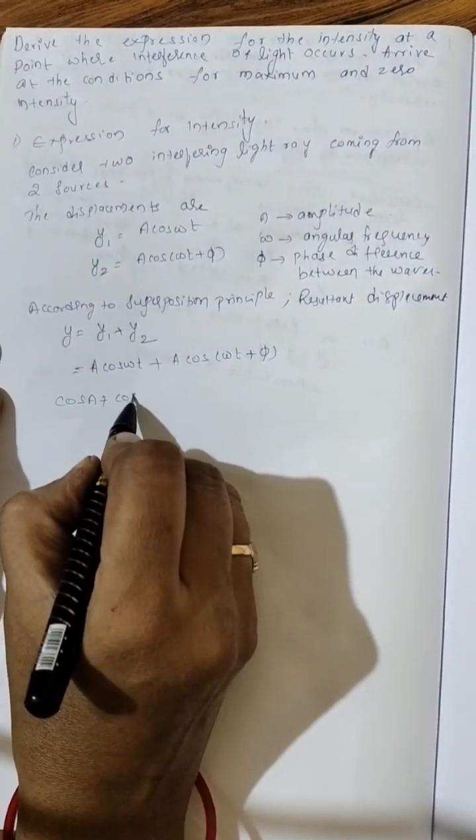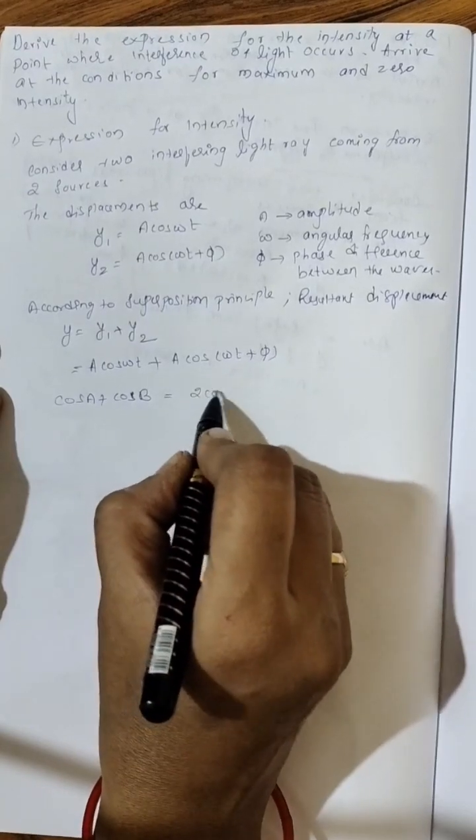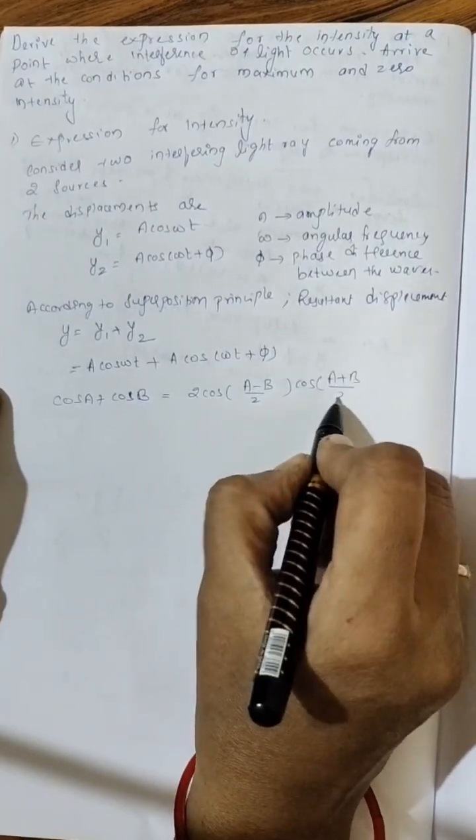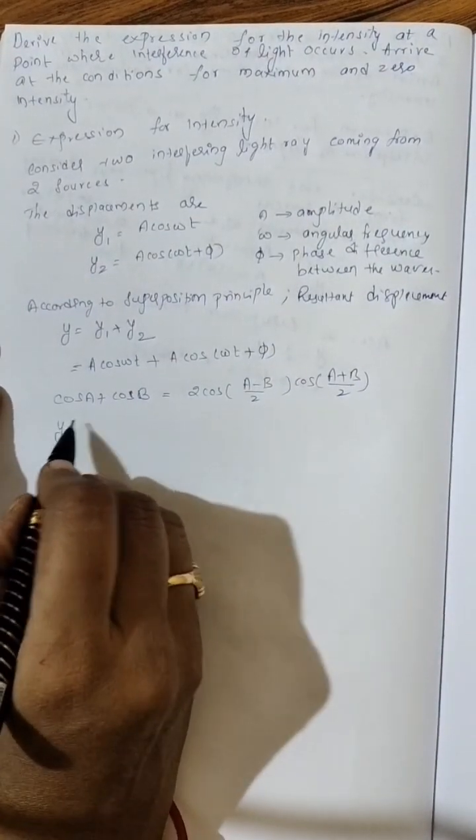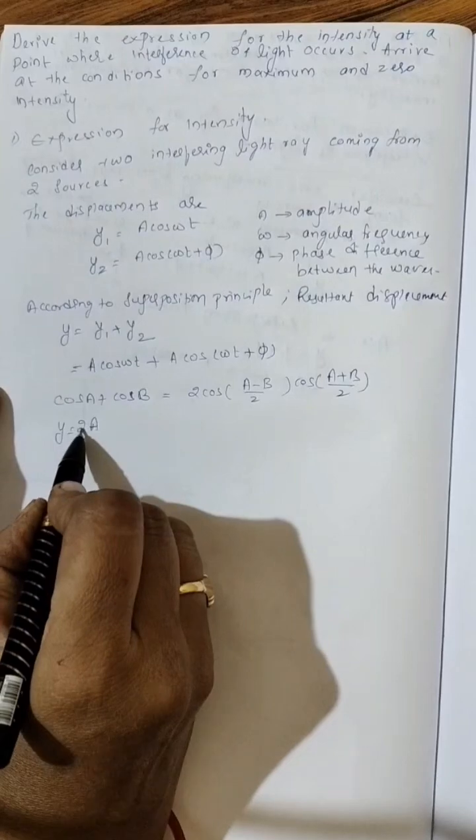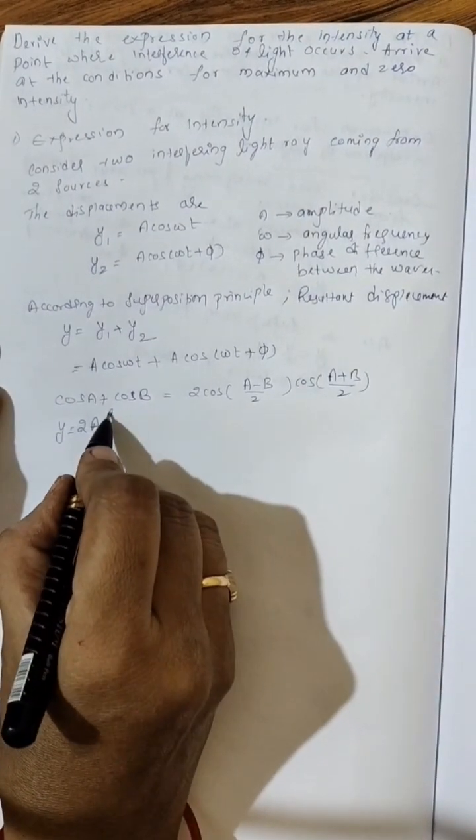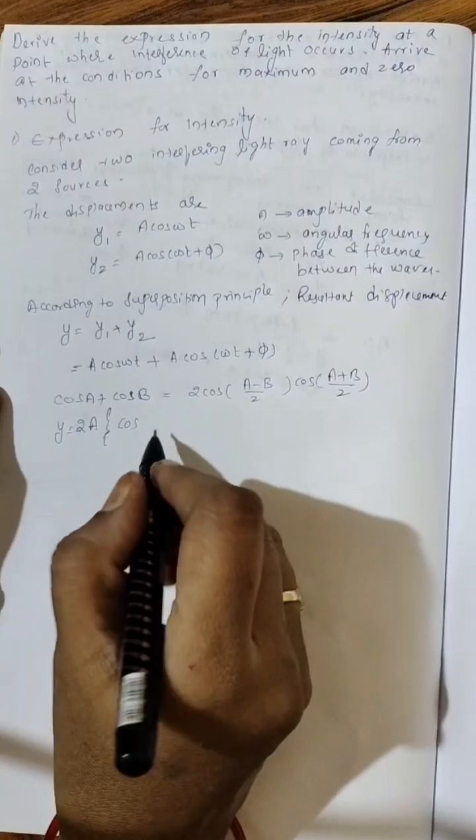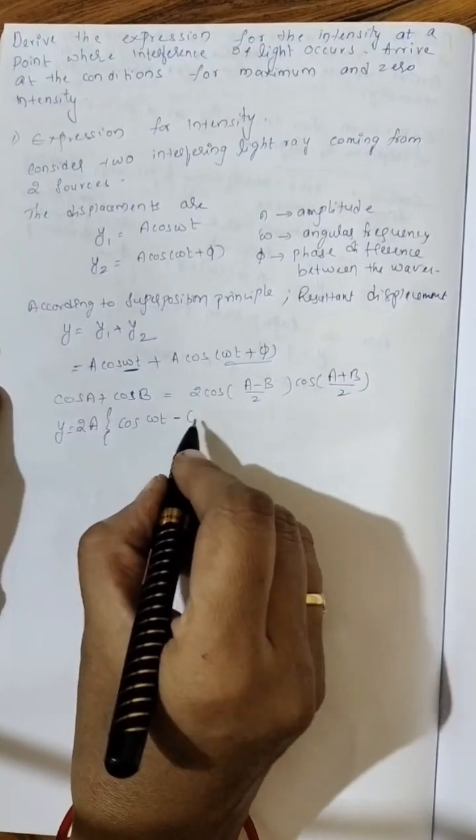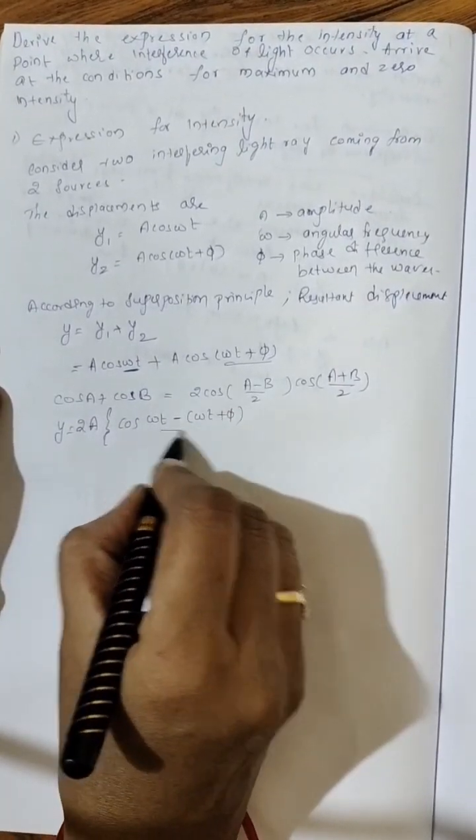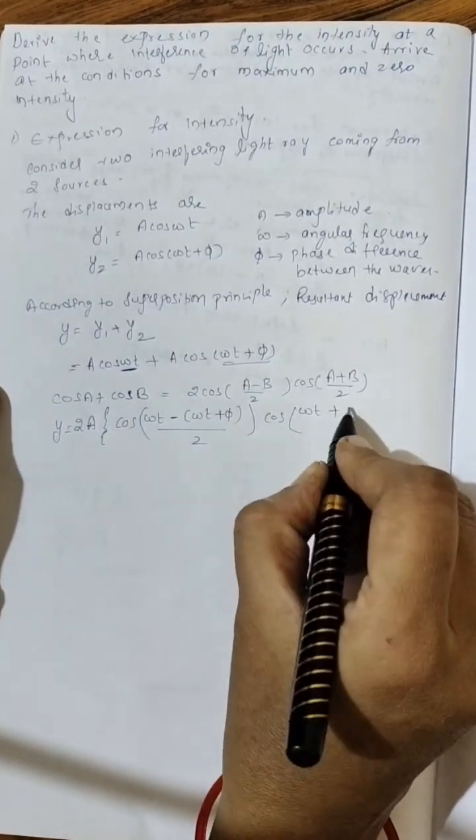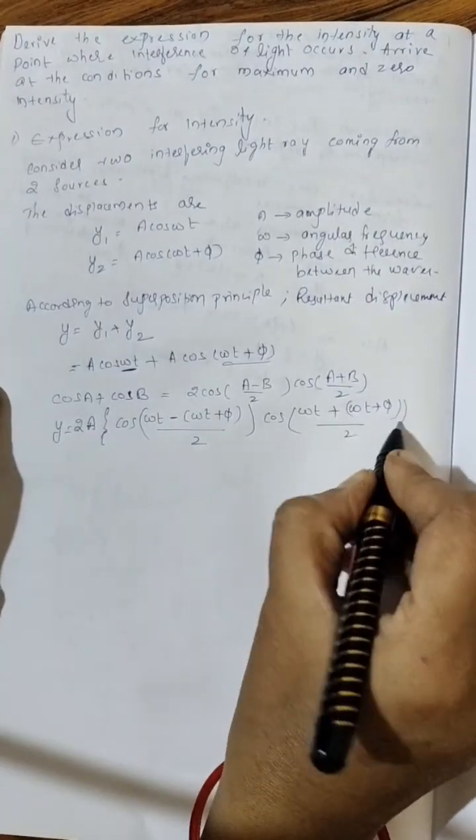Now, let us use this formula: cos A plus cos B equal to 2 cos A minus B by 2 cos A plus B by 2. So we will get 2 A. Here A is common. Next 2. Now cos, what is A? Assume this A and this one B. Omega t minus what is B? Omega t plus phi by 2 cos omega t plus omega t plus phi by 2.